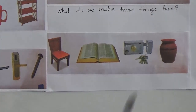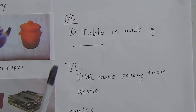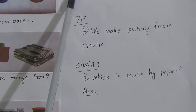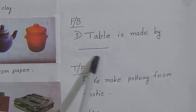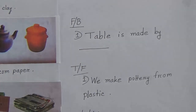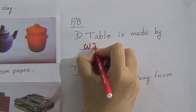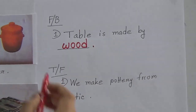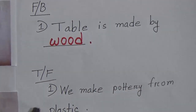Now we will do some exercises. Our first exercise is fill in the blanks, then we will do true/false, and after that a one-word answer. Number one, fill in the blanks: a table is made by — the answer is wood. Now we will write 'wood' here. The spelling is: W, double-O, D — wood.